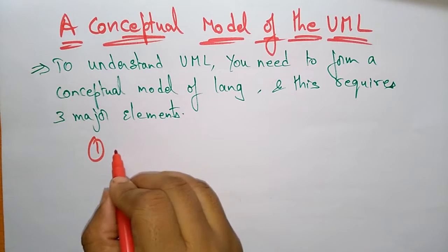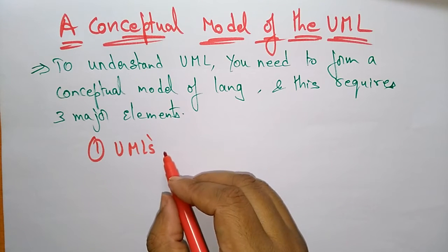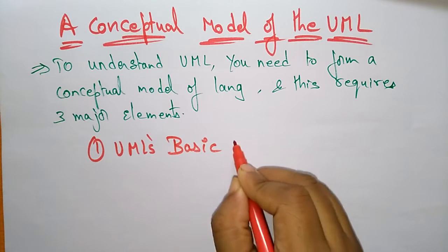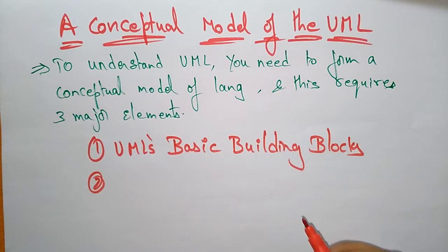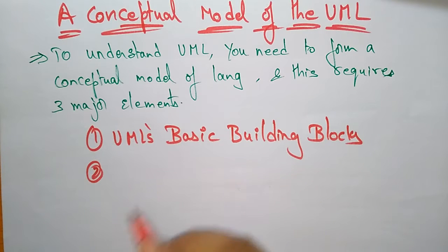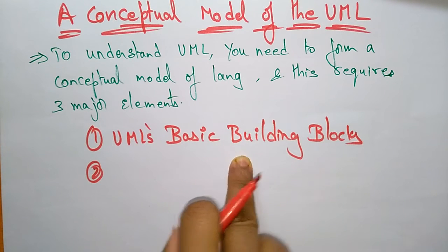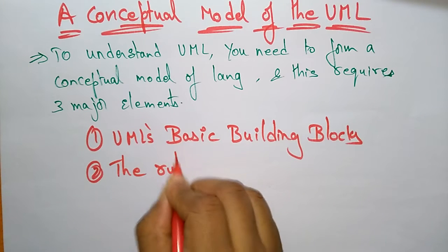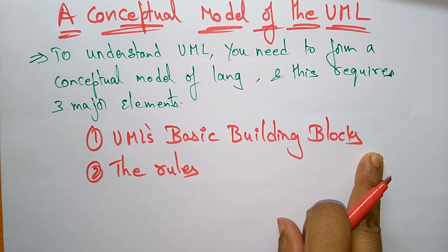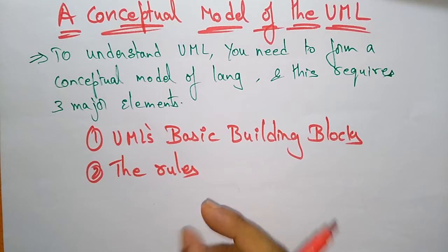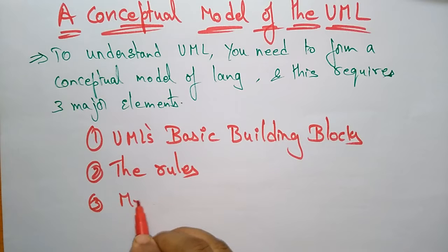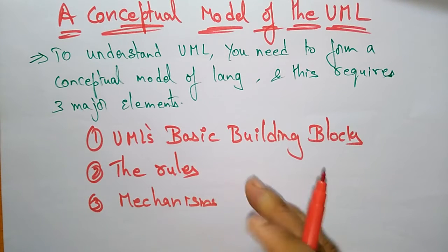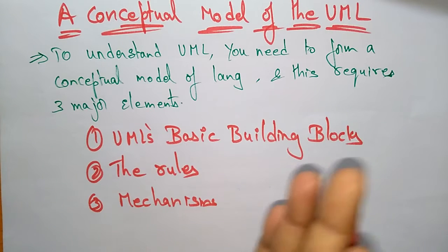The first major element is UML's basic building blocks. The second major element is the rules that dictate how these building blocks are put together. After that, you need to know the mechanism that applies throughout the UML.